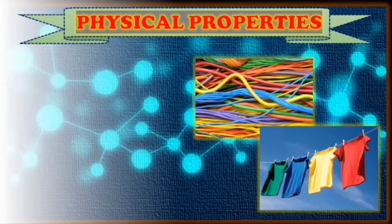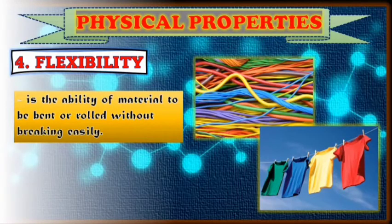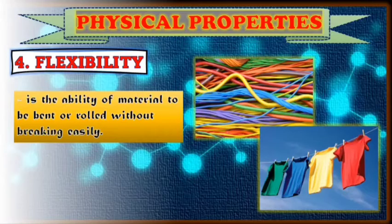The fourth property of material is what you call flexibility. It's the ability of the material to be bent or rolled without breaking easily. Just like wires, rubber, cloth, and some plastic sticks are flexible materials that can be folded, pressed, or stored in any form without breaking. So materials used in making bags, clothes, belts, and tents are flexible materials.